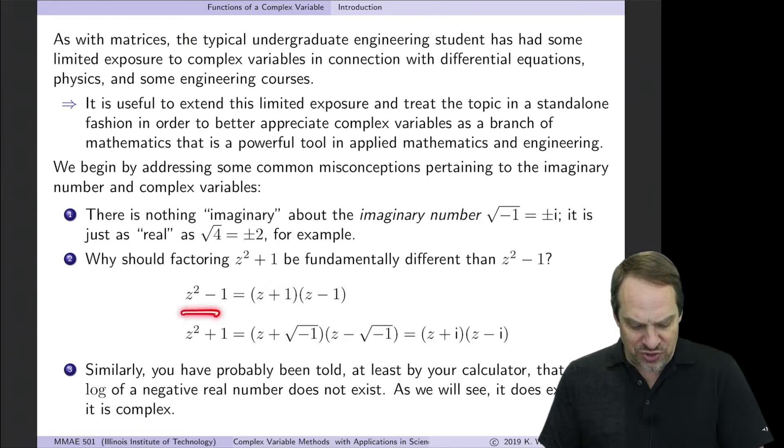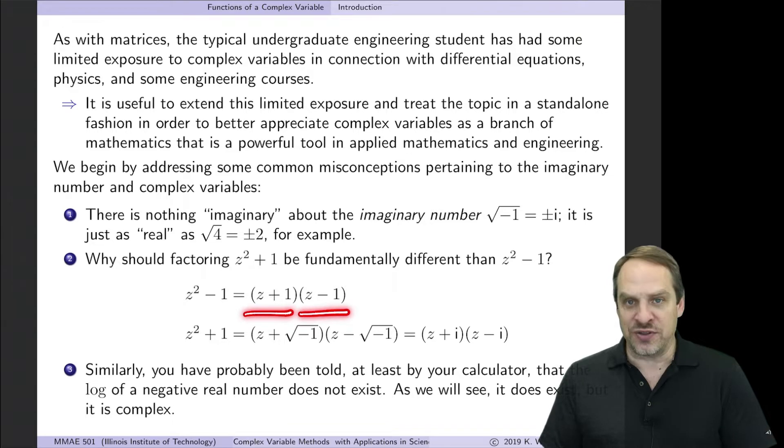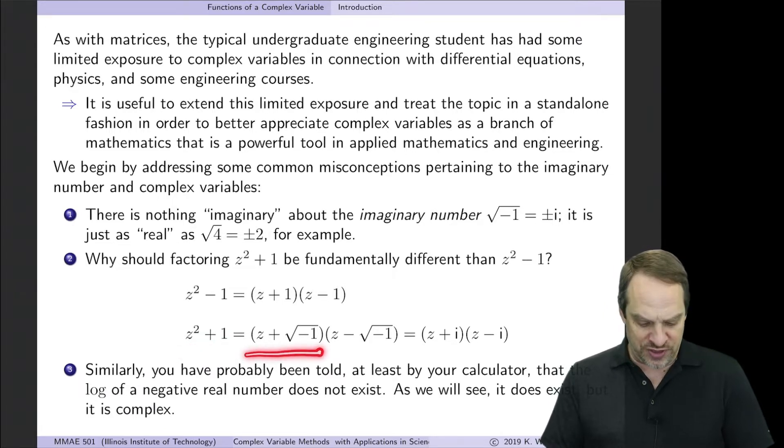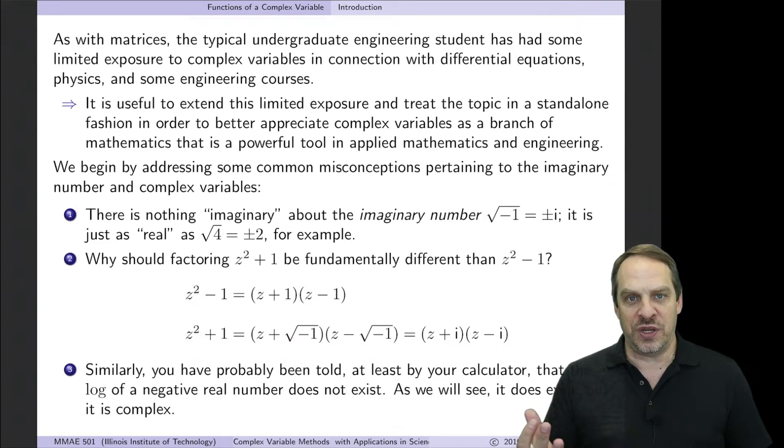So z squared minus one, well, that's z plus one times z minus one. Doesn't bother us. Everything is real. Well, on the other hand, if I have a plus sign, so z squared plus one, well, then that factors into z plus the square root of minus one times z minus the square root of minus one, which is z plus i times z minus i. So again, similar to the square root, the fact that this result gives me factors involving all real variables and numbers, whereas this one gives me imaginary numbers, shouldn't be fundamentally different in any way. It just happens to be an imaginary number.